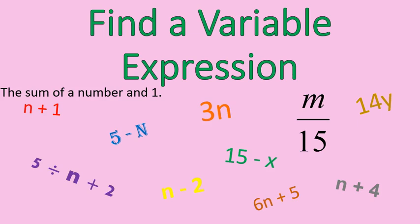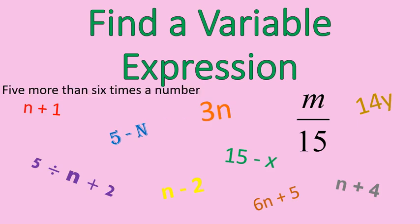The sum of a number and one. Do we know what sum means? Sum means addition. So the one that is red is the sum of a number and one, because you're adding n plus one. Our final one is five more than six times a number. Those are variable expressions — that's the way we can represent them and identify them. They are just numbers, letters, and operations.